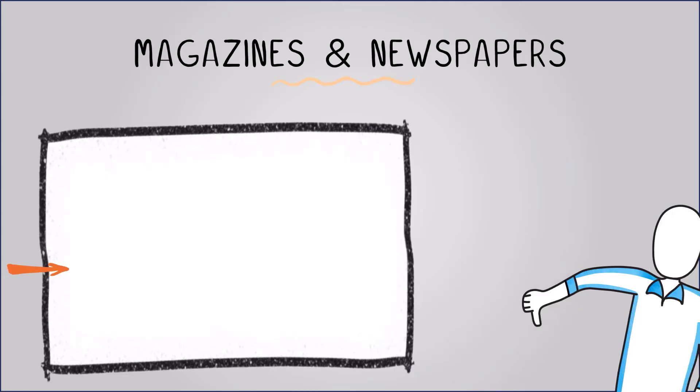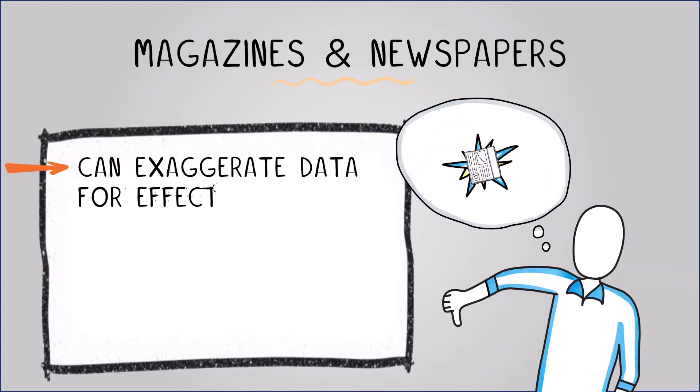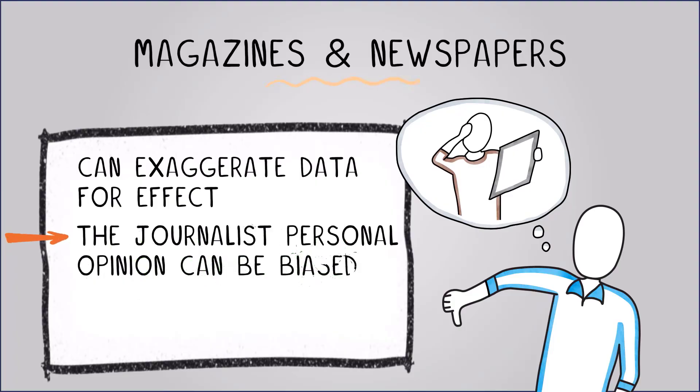Disadvantages include that newspapers and magazines can exaggerate data for effect so it's hard to spot truthful and exaggerated articles. And the journalist's personal opinion can be biased and therefore cause the news article to not be an accurate data source.